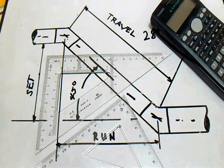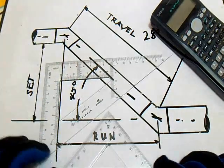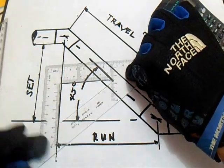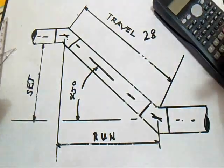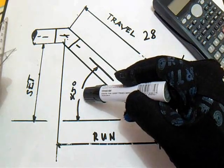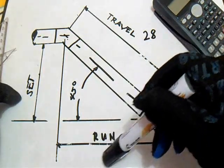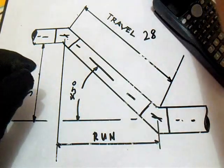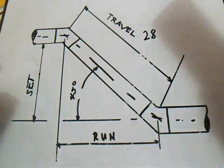Hi, welcome and thanks for watching and subscribing. Now we will compute this angle to find the length of sides when the angle is known. So I have a given here: the travel is 28 and our angle is 45 degrees. We will find the set and run using a formula. So let's start — please take note of our formula.